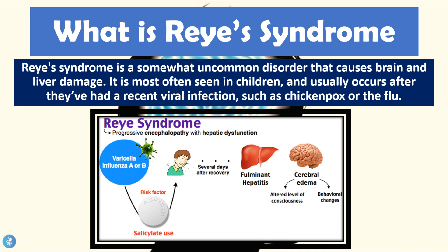Taking a closer look at the picture at the bottom of the screen, Reye's syndrome is a progressive encephalopathy with hepatic dysfunction. This usually occurs after a varicella or influenza A or B infection.